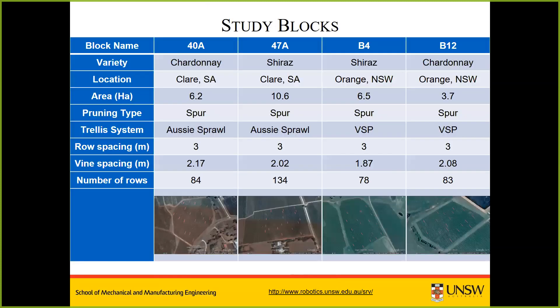The study covers four blocks across two varieties — two Shiraz and two Chardonnay — one at each location of Clare and Orange. These are medium-scale blocks, notably all spur pruned. The two at Clare were Aussie sprawls with vines extending everywhere, whereas the two in Orange were more strictly trained in a VSP system. They were designed to be representative of the Australian wine industry.